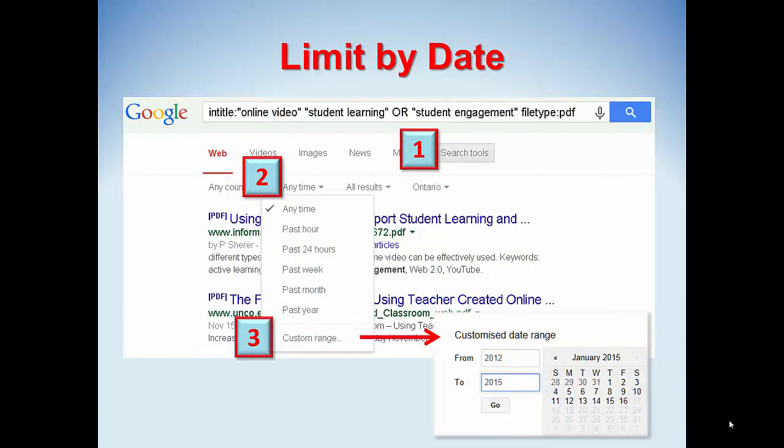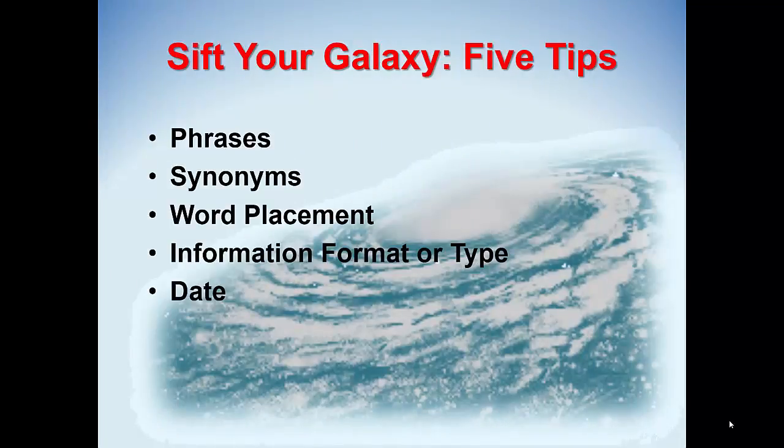Finally, limit by date. Click Search Tools, then Anytime, and add a custom range to limit results to, say, the last three years. Now we're down to 8. Five tips to reduce your hits — enjoy!